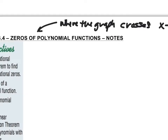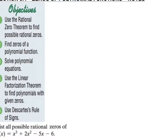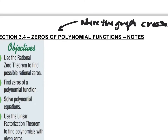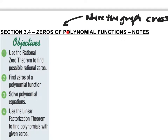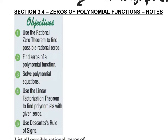This becomes a little bit more difficult than your standard quadratic — that's what you were doing when you were solving quadratic equations, finding where the graph crosses the x-axis. But when we've got other polynomial functions, we've got a lot of zeros we can find. So let's look at our objectives: first, we'll use the rational zero theorem to find possible rational zeros; we'll find zeros of a function and solve polynomial equations — these two pretty much mean the same thing. Then we'll use the linear factorization theorem to find polynomials with given zeros.